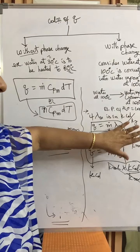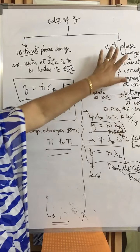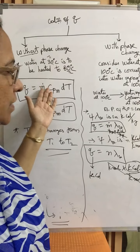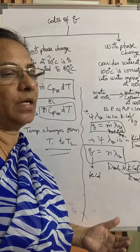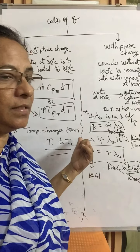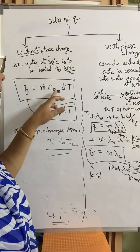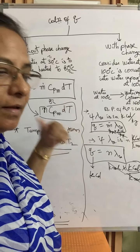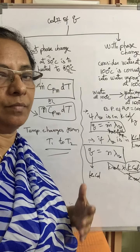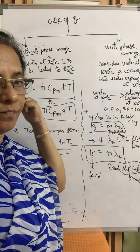In the next class, we will do without-phase-change problems — small calculations just to build up the concepts and learn how to calculate Q when Cpm is given. Then in the third class, we will do the actual big problem where we need to calculate Cpm first and then Q. Thank you.